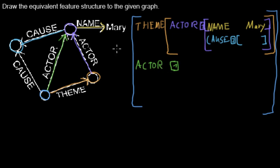Now this property ACTOR here points to the same node as its edge. And here the feature structure by the pointer points to the same property that's written down here.